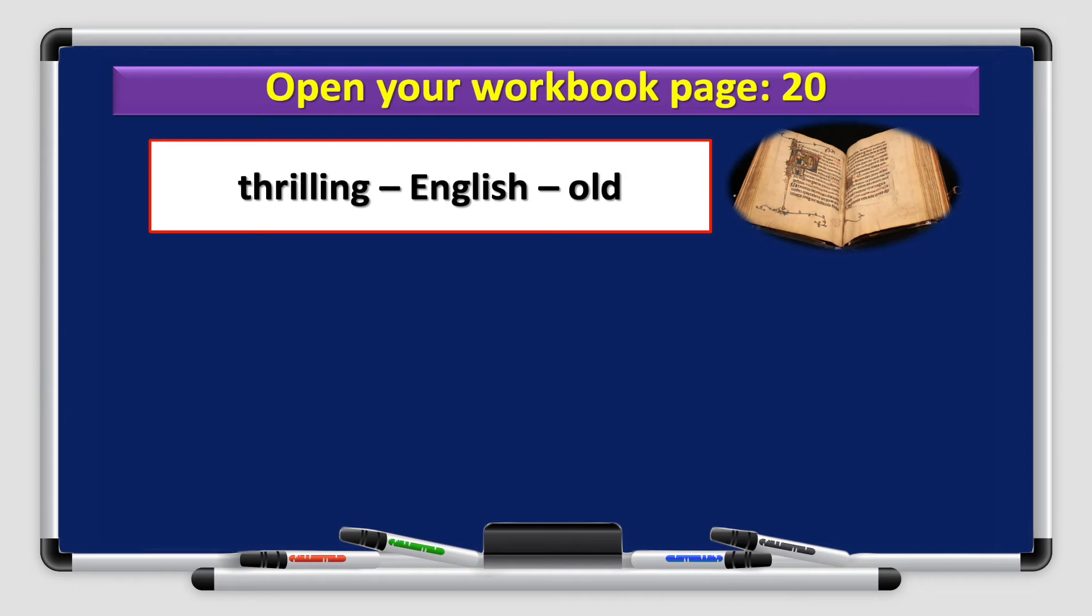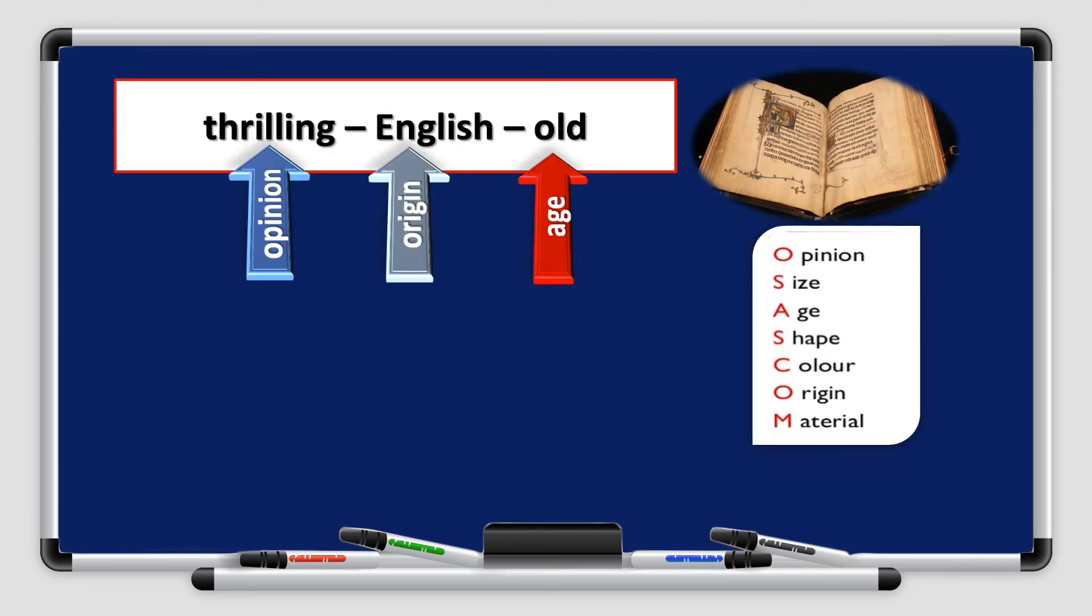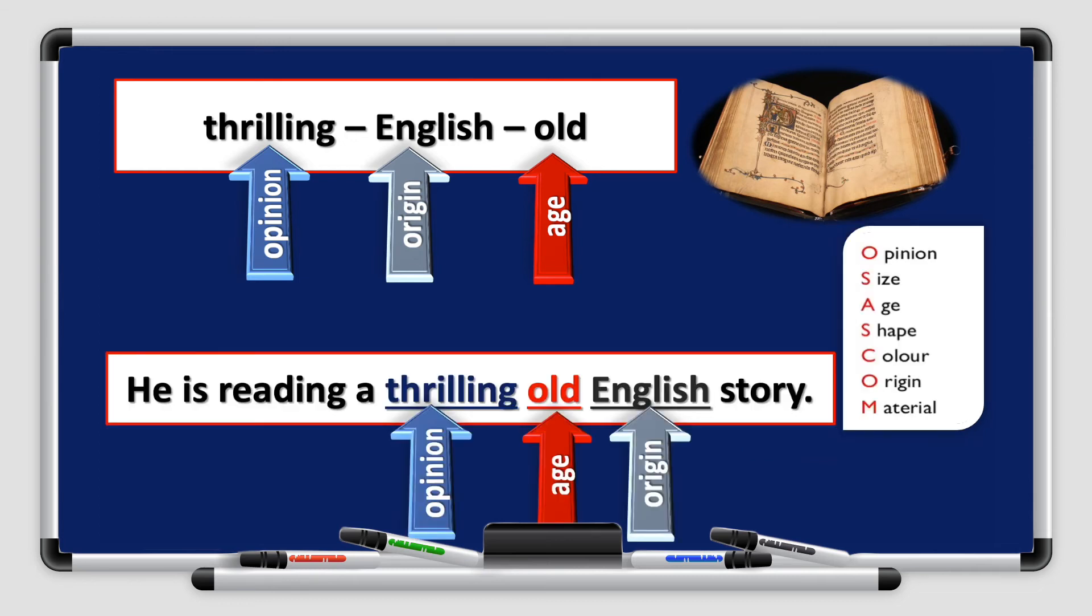Number two. You have a book here. And you have the adjectives thrilling, English, and old. Thrilling is an opinion. English is an origin. And old is an age. I start with the opinion, followed by the age, followed by the origin, as you can see from the table here. So, he is reading a thrilling old English story.